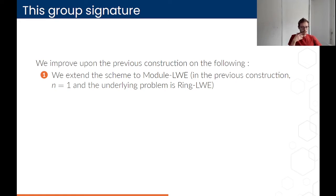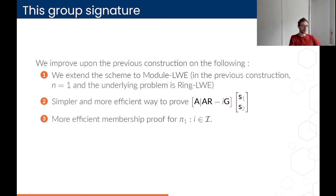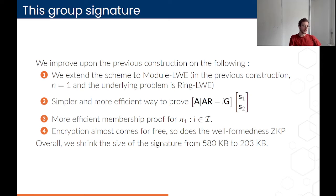Now the last part of the video: a list of improvements we bring to this lattice-based group signature. First, we extend this scheme to module LWE. Second, we give a simpler and more efficient way to prove the knowledge of the secret key for the signature of a user. Third, we give a more efficient membership proof — we use a different set calligraphic I, which comes with a different zero-knowledge proof. And finally, the encryption almost comes for free, as does the well-formedness proof of the ciphertext. Overall, we shrink the size of the signature from 580 kilobytes to 203 kilobytes.